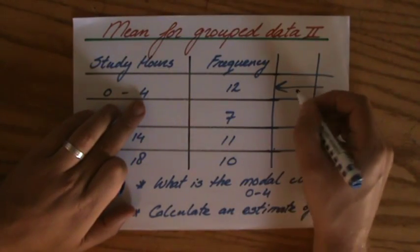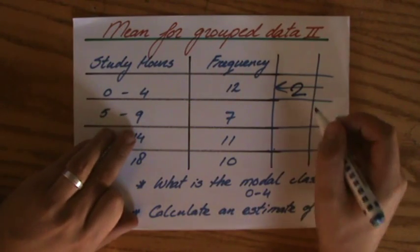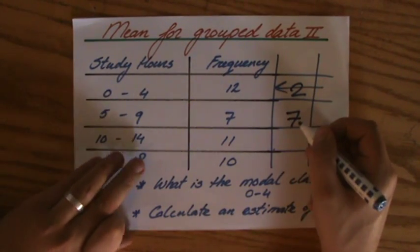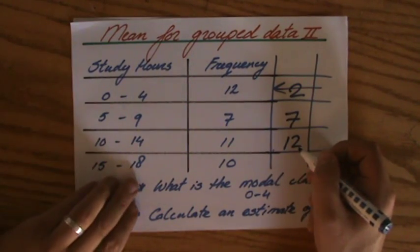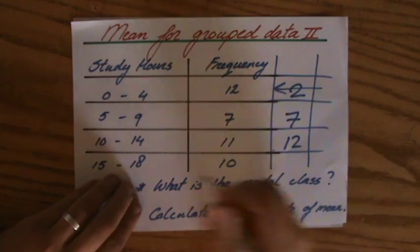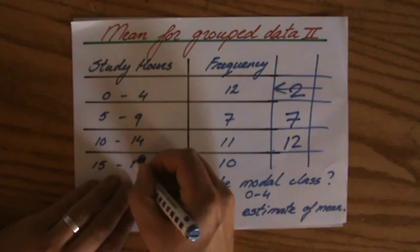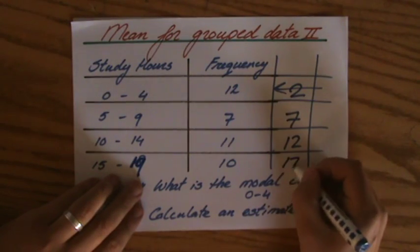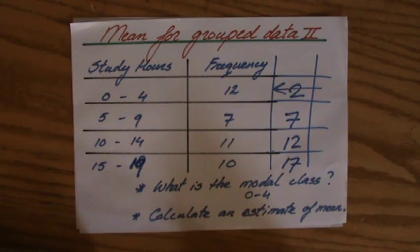Between 0 and 4, what lies in the middle? That will be a 2 and a 7 in the middle there and a 12 in the middle there. And that is wrong. That should be a 9. Can I just change that now for you? Yeah, so let's put a 17 there. Okay, so between 15 and 19 hours of study.